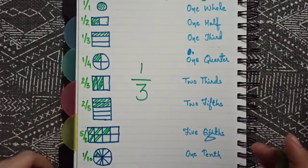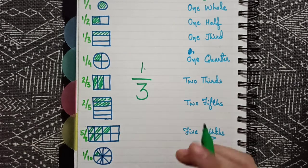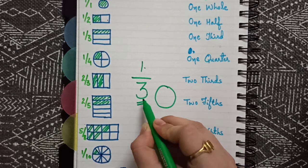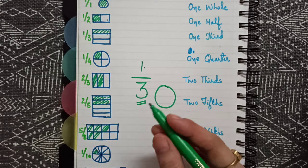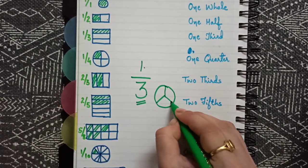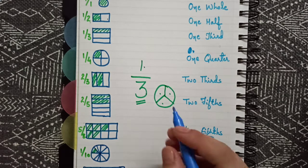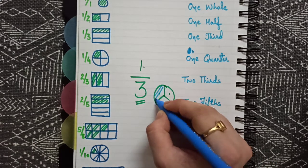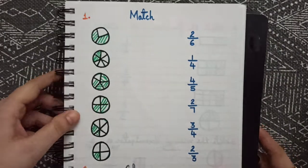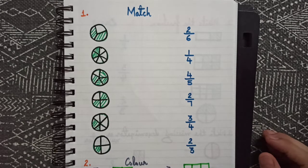So if I have one by three, one is the numerator and three is the denominator. We'll tell kids: suppose we have a circle, triangle, rectangle, or any shape — if the denominator is three, we first divide it into three parts — one, two, and three. Then the numerator tells the shaded part. So if numerator is one, this is one by three.